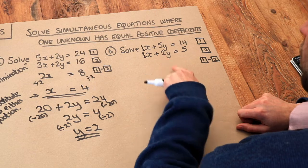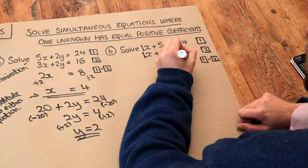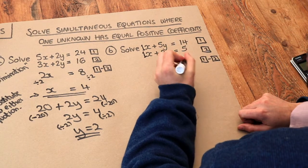5y minus 2y is equal to 3y. And 14 minus 5 is 9. So if 3y is 9 then y is going to be 9 divided by 3 which is 3.